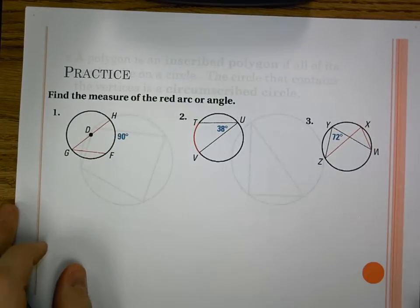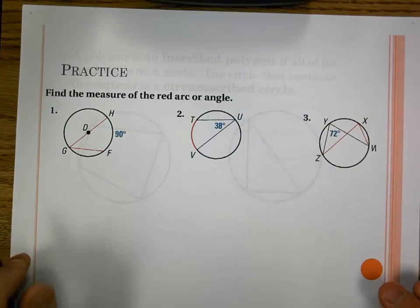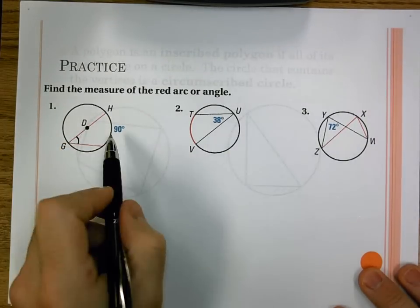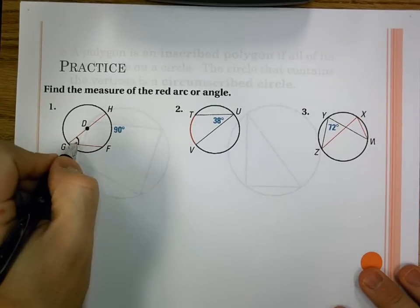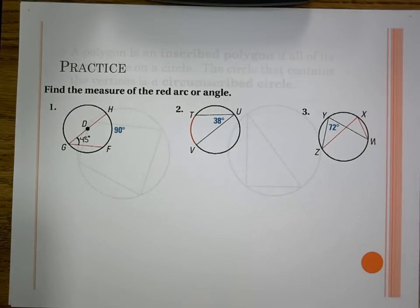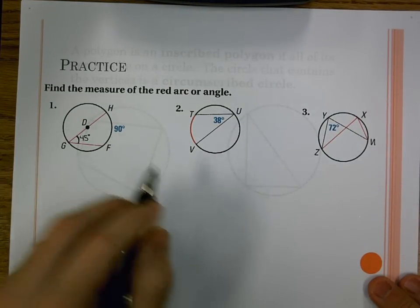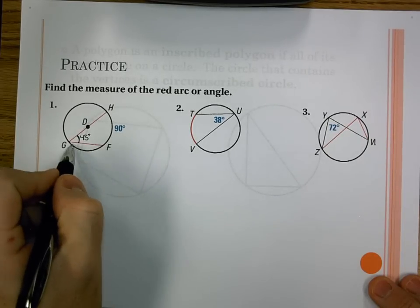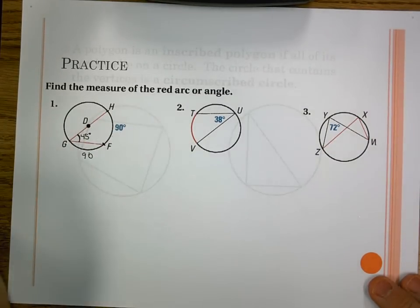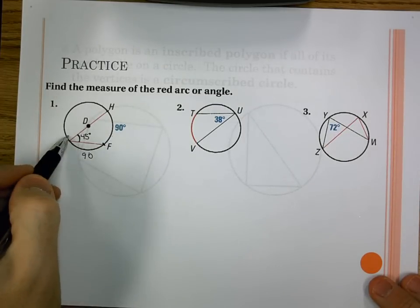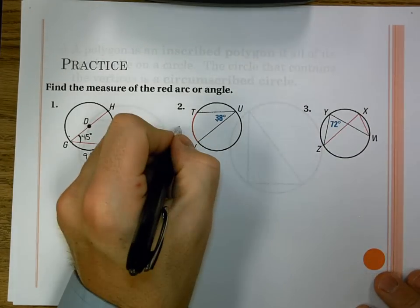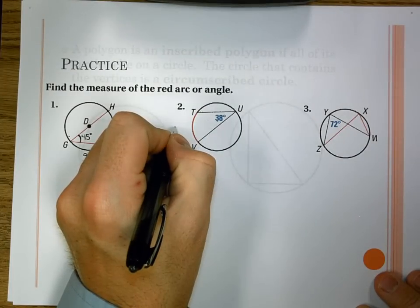Let's find the measure of the red arc and angle. First one: the angle goes to the arc. The arc is 90, so the angle is smaller — it's 45, which is half of 90. For number two, I have the angle and need the arc. The angle is 38, so I double it to get arc TV equals 76. This is not a diameter, so we can't find additional values.